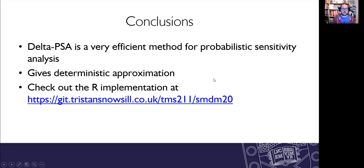And so in conclusion, the delta PSA is a very efficient method for probabilistic sensitivity analysis that is a viable alternative to Monte Carlo probabilistic sensitivity analysis. It gives a deterministic approximation to the outcomes. And there is also an R implementation which you can check out online. Thank you very much for your time. And I look forward to any questions that you may have.